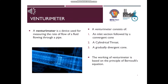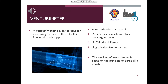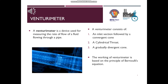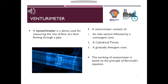Let us first study about venturimeter. A venturimeter is a device used for measuring the rate of flow of a fluid flowing through a pipe. It consists of three parts: an inlet section followed by a convergent cone, a cylindrical throat, and a gradually divergent cone.